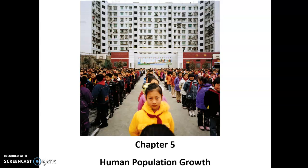I'm going to begin with the case study from your textbook, but provide some information that isn't listed there. China's population is the largest population in the world, followed by India and then the United States. There are over 1.4 billion people who live in China, and it's roughly the same geographic size as the United States, where we have a little over 330 million people.